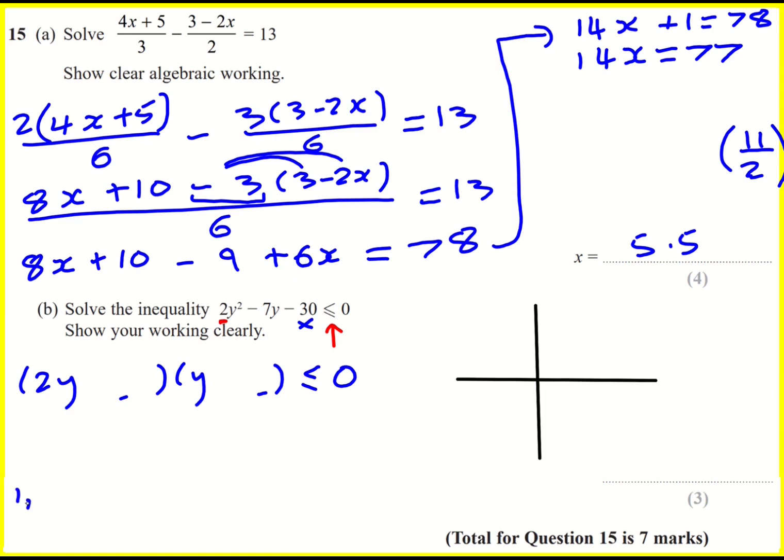But we can still deal with the factors like 1 and 30, like 30 seems way too big, 2 and 15. 15 seems like it's going to be too big if we put it either side. Actually, I'm going to just jump to 5 and 6. That just seems like, because minus 7 is quite small, let's try that out.